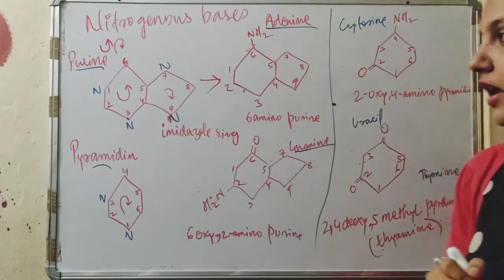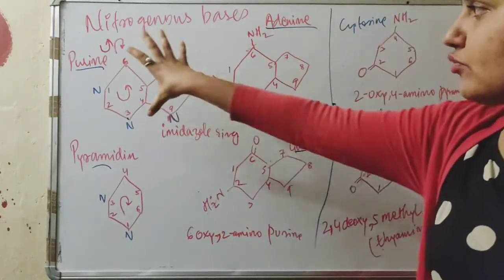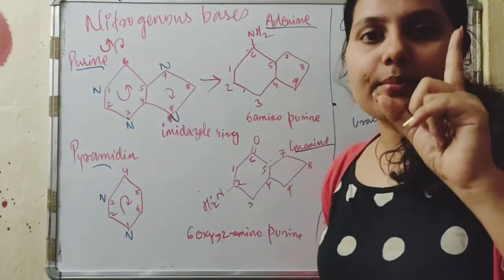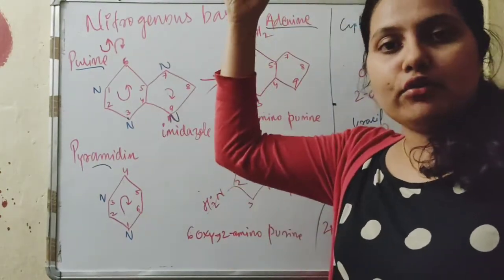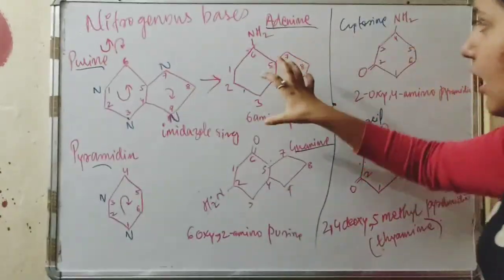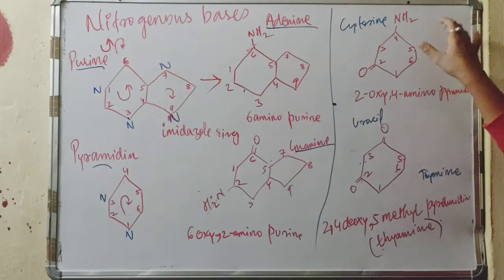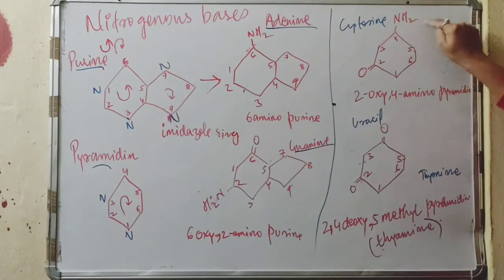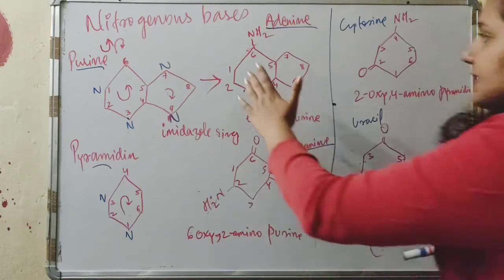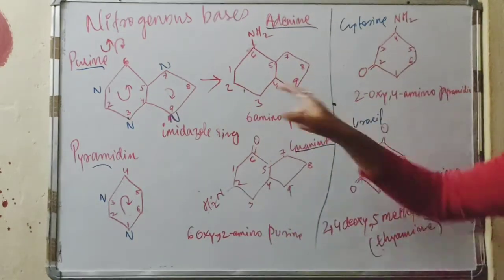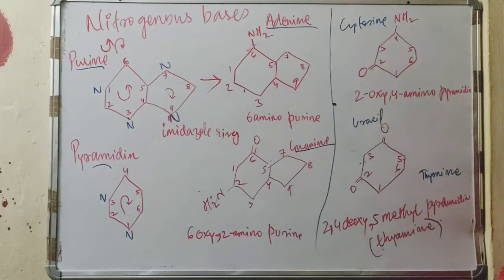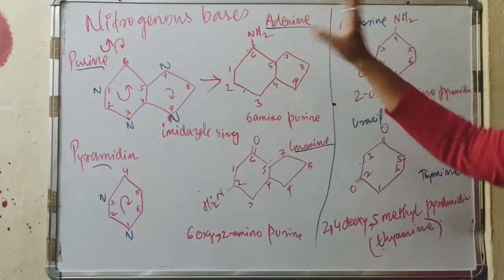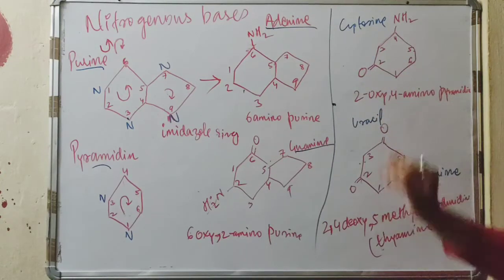This is adenine. You draw the same purine ring and then add an amino group at the sixth carbon — in the head part you draw the amino group. For cytosine, you draw the pyrimidine ring and in the head part, at the fourth carbon, you draw the same amino group. The exception is that in cytosine you also add oxygen. Both adenine and cytosine have an amino group in the head part, but cytosine additionally has oxygen.